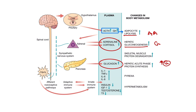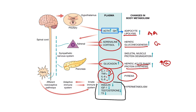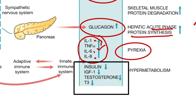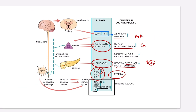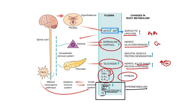Glucagon acts on the liver — hepatic acute phase proteins increase and protein synthesis also increases. Pro-inflammatory substances such as interleukin-1, interleukin-6, interleukin-8, and tumor necrosis factor alpha also increase in concentration and are responsible for pyrexia — fever is typically the first symptom of any type of inflammation. Some important hormones that are reduced in concentration include insulin, insulin-like growth factor-1, testosterone, and T3 — and these cause hypermetabolism.